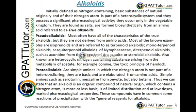Alkaloids means the substances which are behaving like basic nature or basic substances. Initially, they have been defined as nitrogen-containing basic substances obtained from natural sources. The nitrogen atom is sometimes a part of a heterocyclic ring or sometimes a linear side chain. They occur only in the vegetable kingdom. They are found mostly in the form of salts, and they are biosynthesized from amino acids, and hence they are known as true alkaloids.